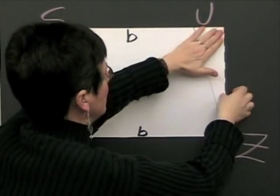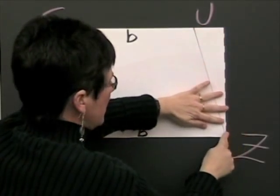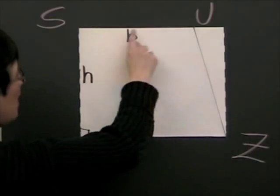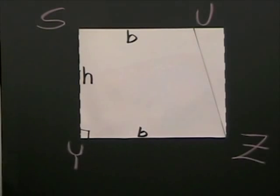And now, we'll have a 90 degree angle here, and a 90 degree angle down here. So, now, we have a rectangle.